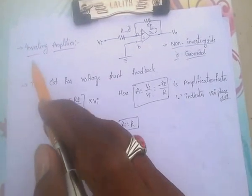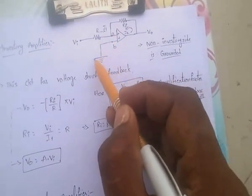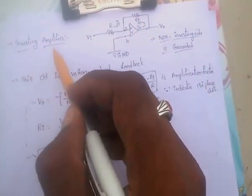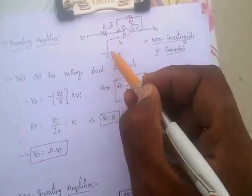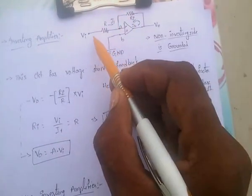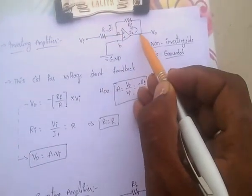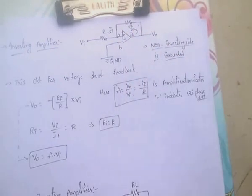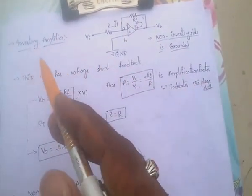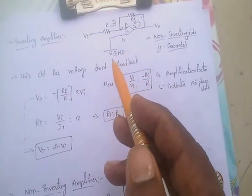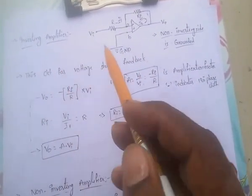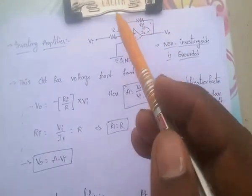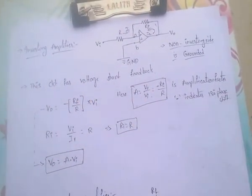Here, in case of inverting amplifier, the non-inverting side is connected to the ground. And this circuit has voltage shunt feedback.